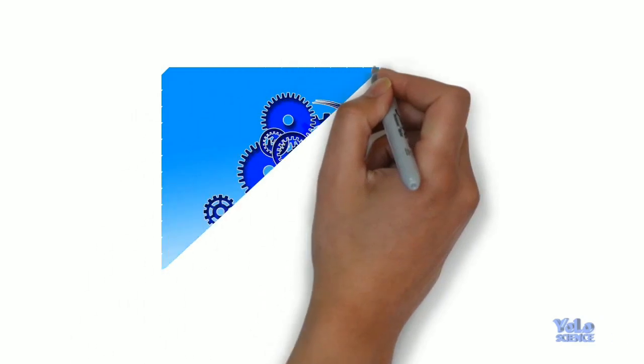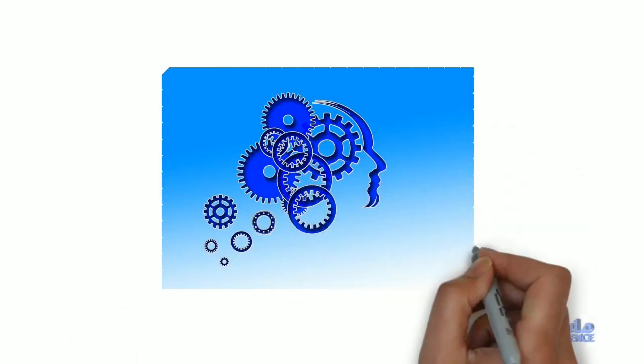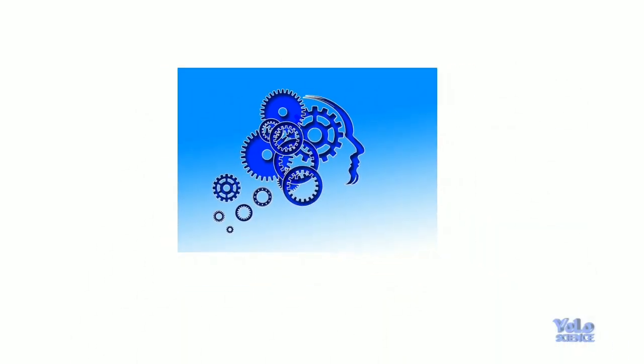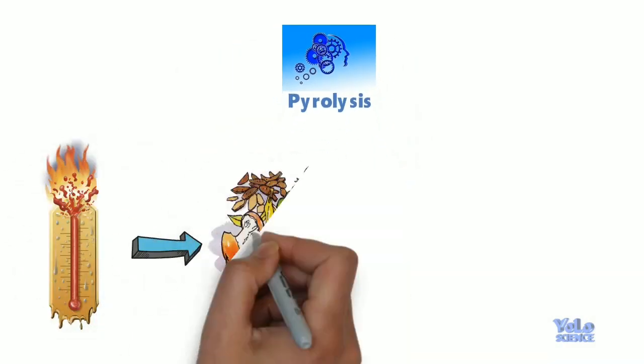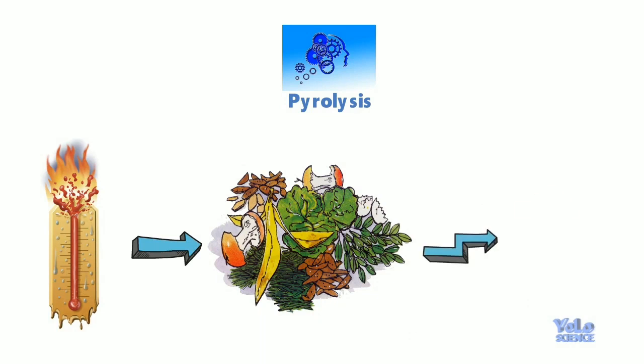Now we are going to talk about advanced technologies like pyrolysis which uses high temperature to break down organic waste into smaller portions which can then be disposed of more easily.